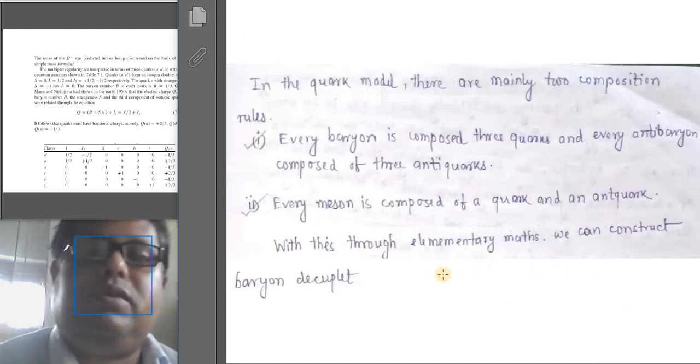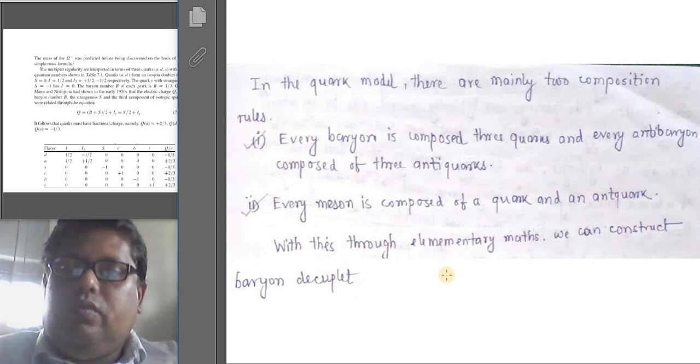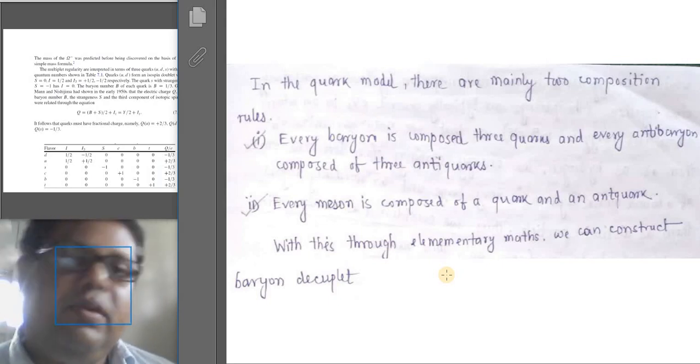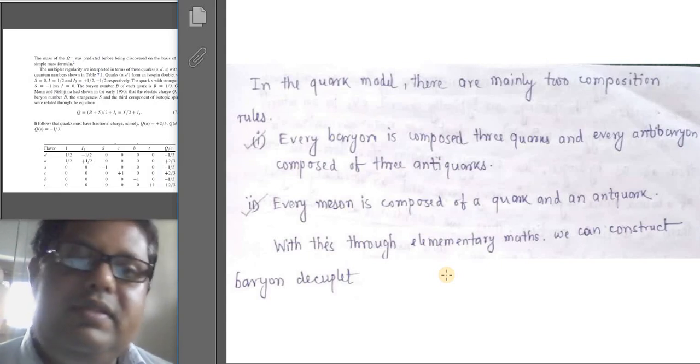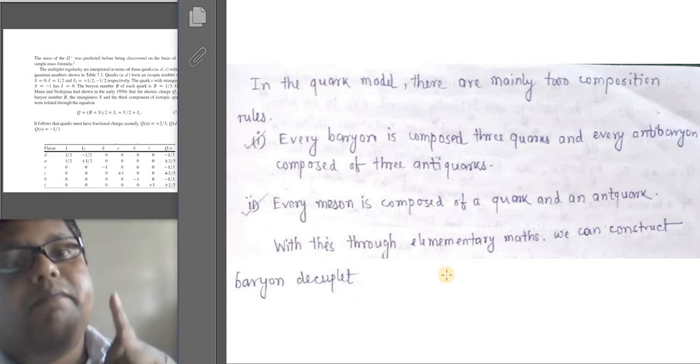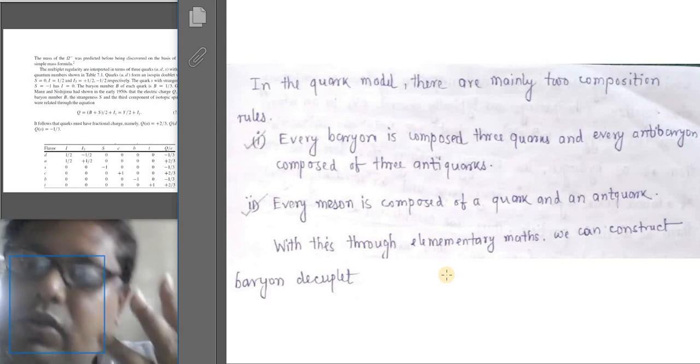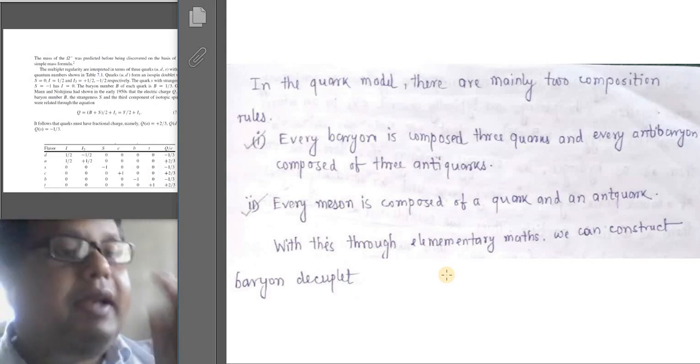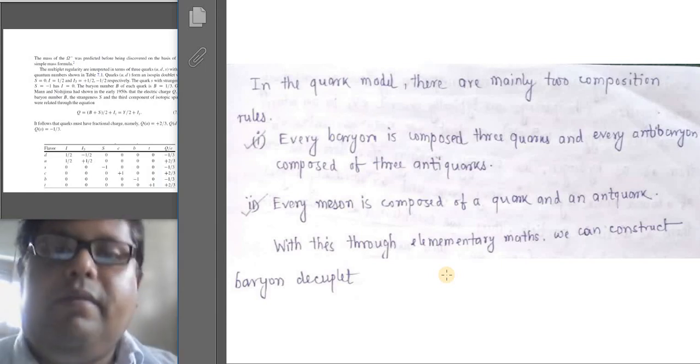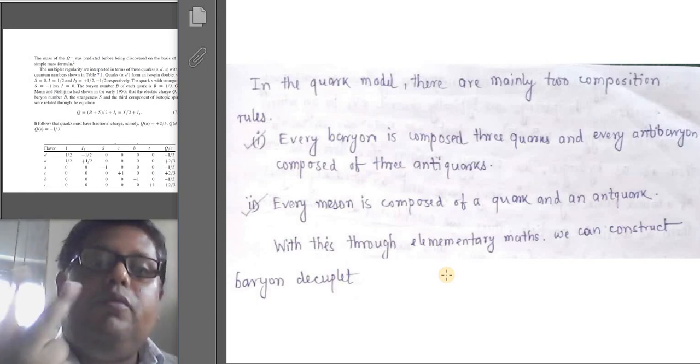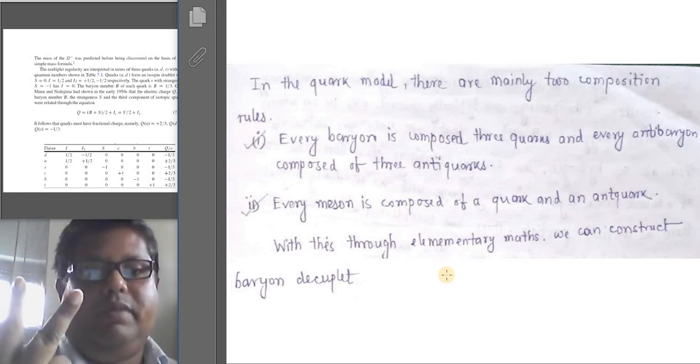Now the next question is, what did this model do? What does it predict? How are you going to interpret these hadrons? Well, in this model there are basically two composition rules. The first one is that every baryon is composed of three quarks (QQQ), and every antibaryon is composed of three antiquarks. Regarding mesons, we say they are composed of a quark and antiquark pair (Q Q-bar).